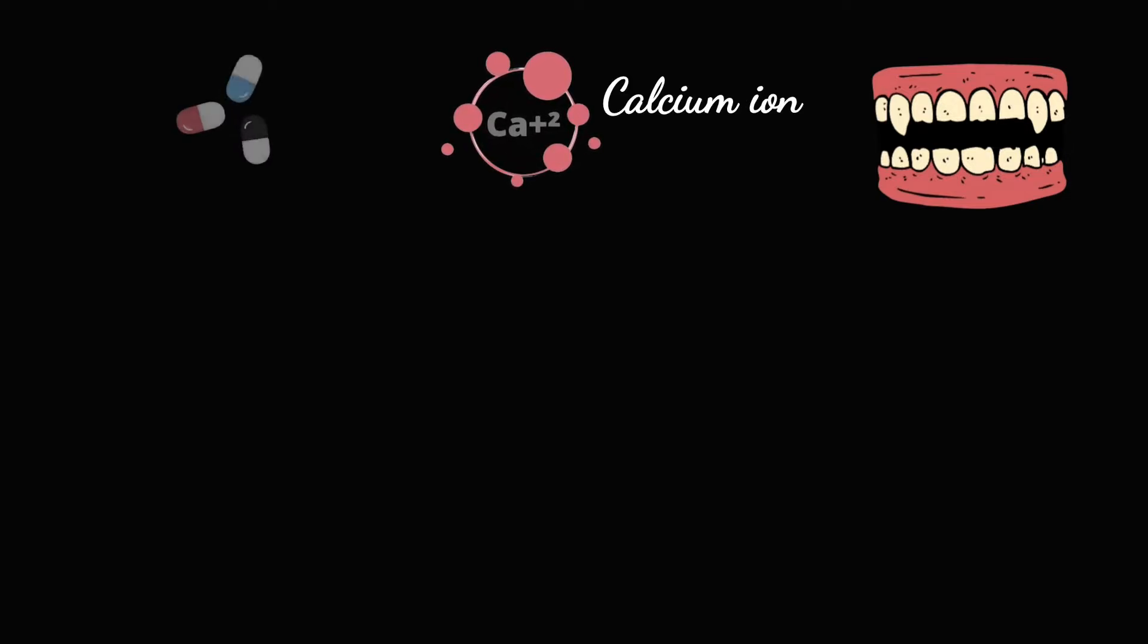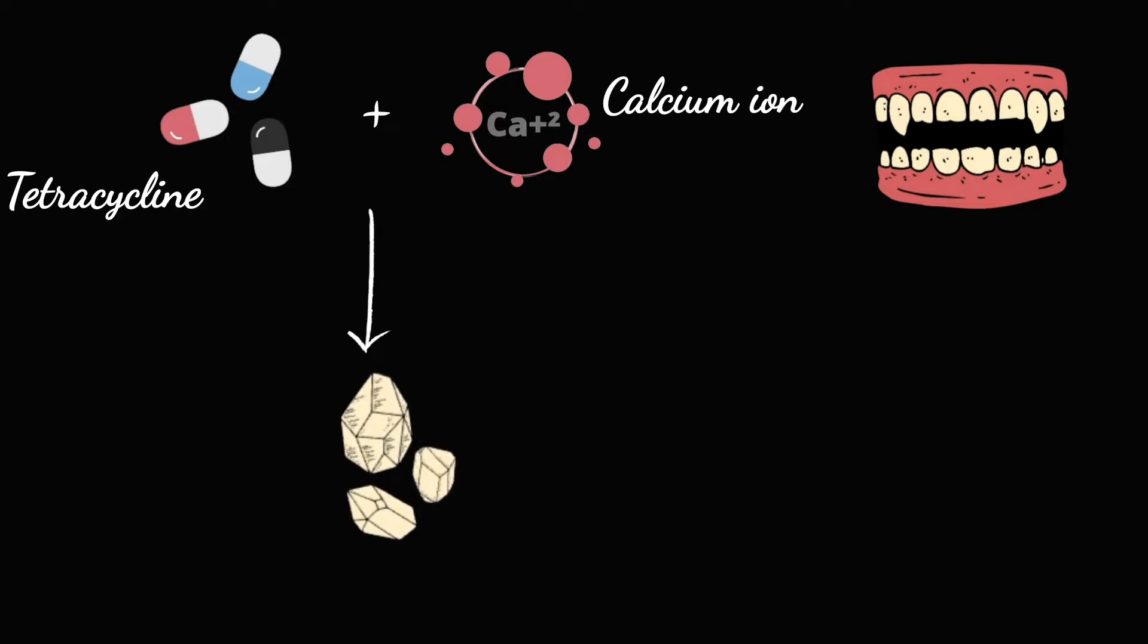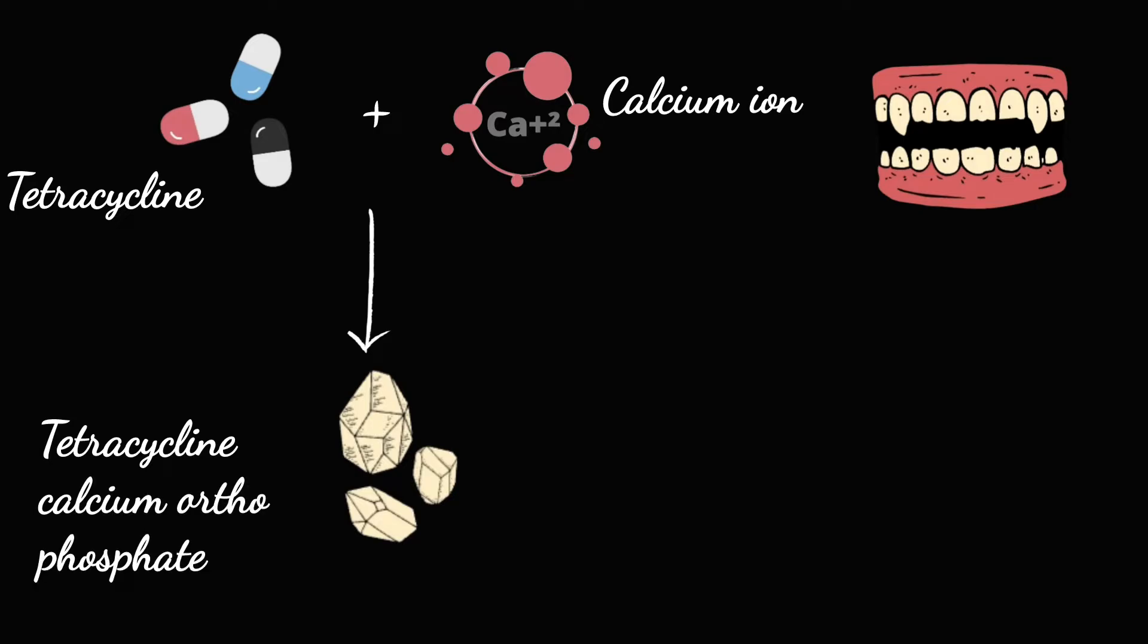What causes tetracycline to cause the discoloration of teeth? Basically, it is due to the calcium chelating properties of tetracycline. In simple words, tetracycline binds with calcium and forms tetracycline calcium orthophosphate complex. This complex gets deposited in the growing bones and teeth, leading to discoloration of the teeth.